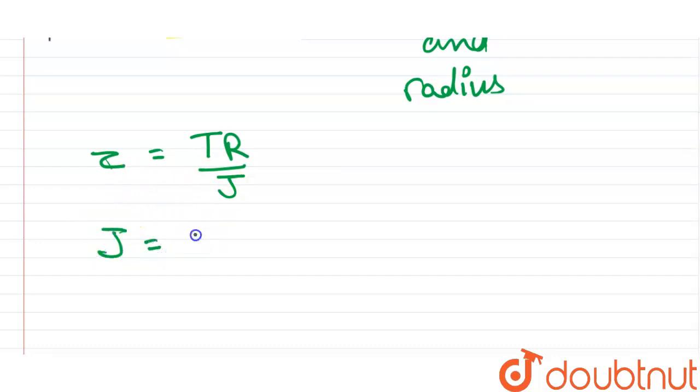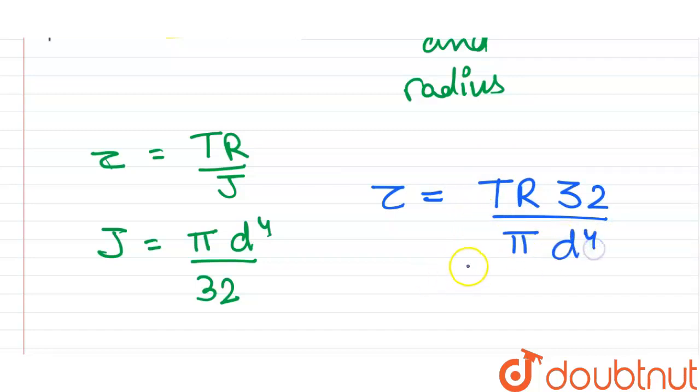J is equal to π d raised to the power 4 upon 32. This is the constant of torsion torque. So the expression for torsion torque after substituting the value of constant becomes torque is equal to TR 32 upon π d raised to the power 4.